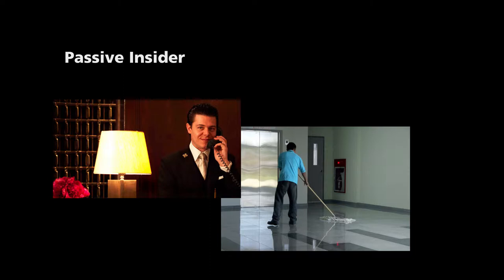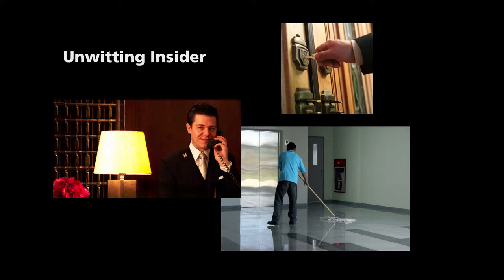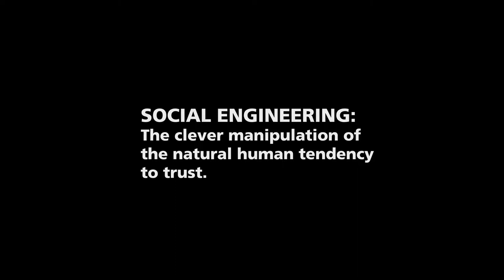A passive insider is willing to pass information to others or perform minor actions to assist in an attack. An unwitting insider is an employee who is easily manipulated by others and, for various reasons, can be recruited to pass sensitive information to a third party. An unwitting insider has generally been coerced or socially engineered by a malicious party into unknowingly assisting in their plan.